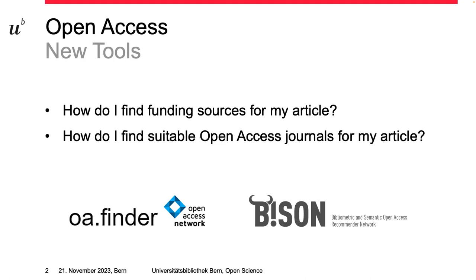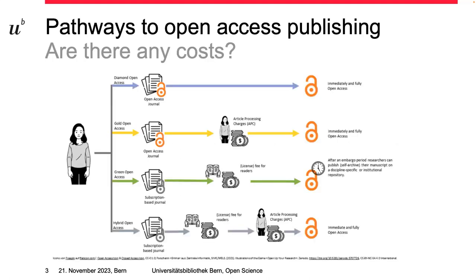This is a complex question and our team at the library is getting a lot of inquiries concerning funding options. We hope the Open Access Finder makes it easier for you to check your options. I will also talk about Bison, a recommender service that can help you find suitable Open Access journals for your articles. But before we delve into those two new tools, I want to quickly recapitulate the different pathways of Open Access.